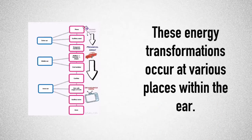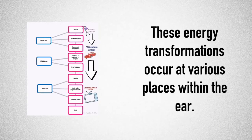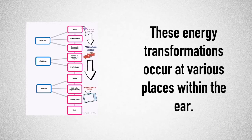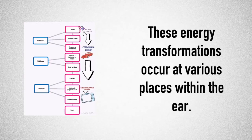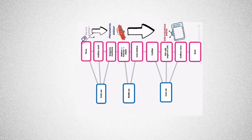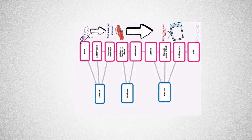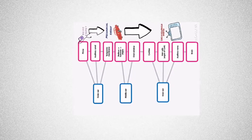Energy transformations occur at various places within the ear, and we need to be able to identify where in the ear the change from sound to mechanical to electrochemical energy takes place. Sound waves travel through the air, and the pinna helps to direct those into our auditory canal.